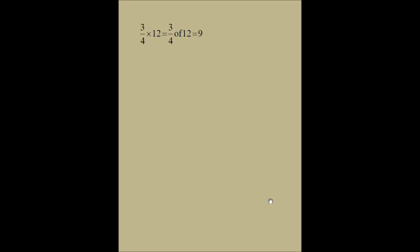Before we multiply a fraction by another fraction, let's try to understand what we mean by 3 fourths times 12. To me — and to many of us — it means 3 fourths of 12. Well, 1 fourth of 12 is 3, so 3 fourths of 12 would be 3 times 3, or 9.